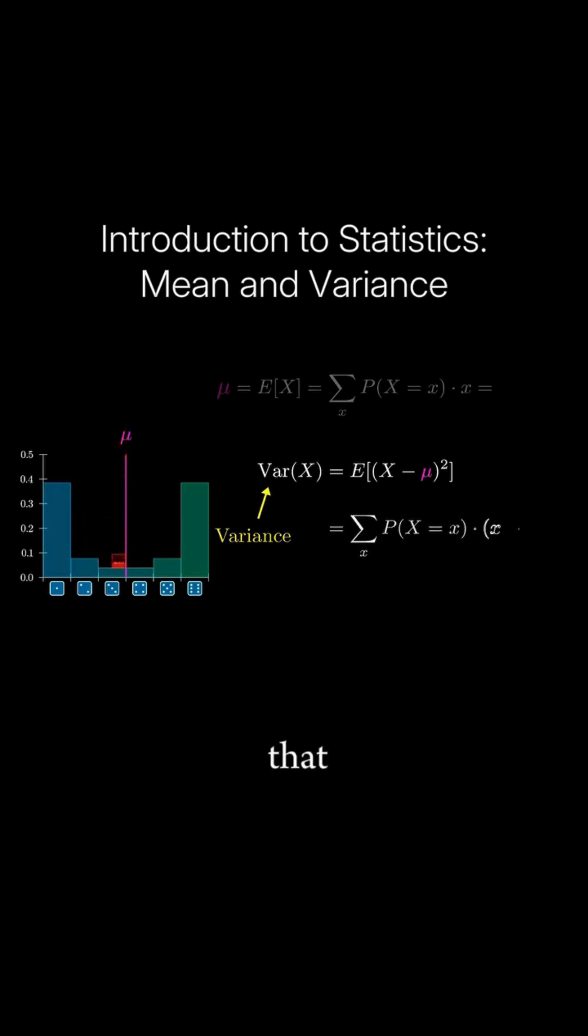The idea is that whether your value is below or above the mean, when you square that difference you get a positive number, and the larger the difference, the bigger that number.